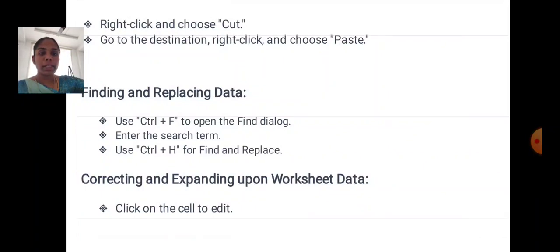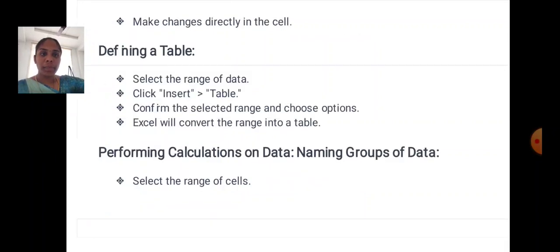Finding and replacing data: use Ctrl+F to open the Find dialog, enter the search term, use Ctrl+H for Find and Replace. Correcting and expanding worksheet data: click on the cell to edit and make changes directly in the cell. Defining a table: select the range of data, click Insert Table, confirm the selected range and choose options. Excel will convert the range into a table.